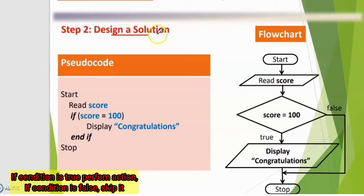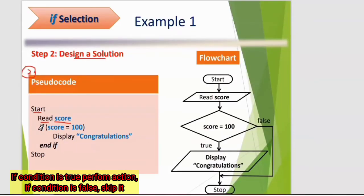Second step: design a solution — write the pseudocode. Start with 'Start', then 'Read score'. The input is score. For the selection, you must add the 'if' keyword. Write: if (score = 100), then display 'Congratulations', then end if. 'End if' is used to indicate the end of the if block.